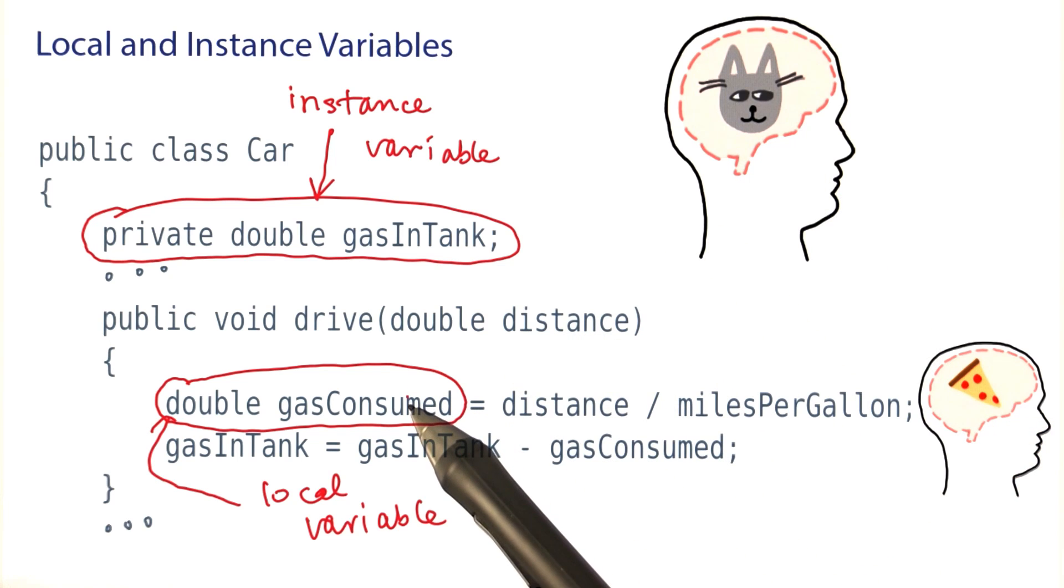You want to make something a local variable when you can forget about it after exiting the method.